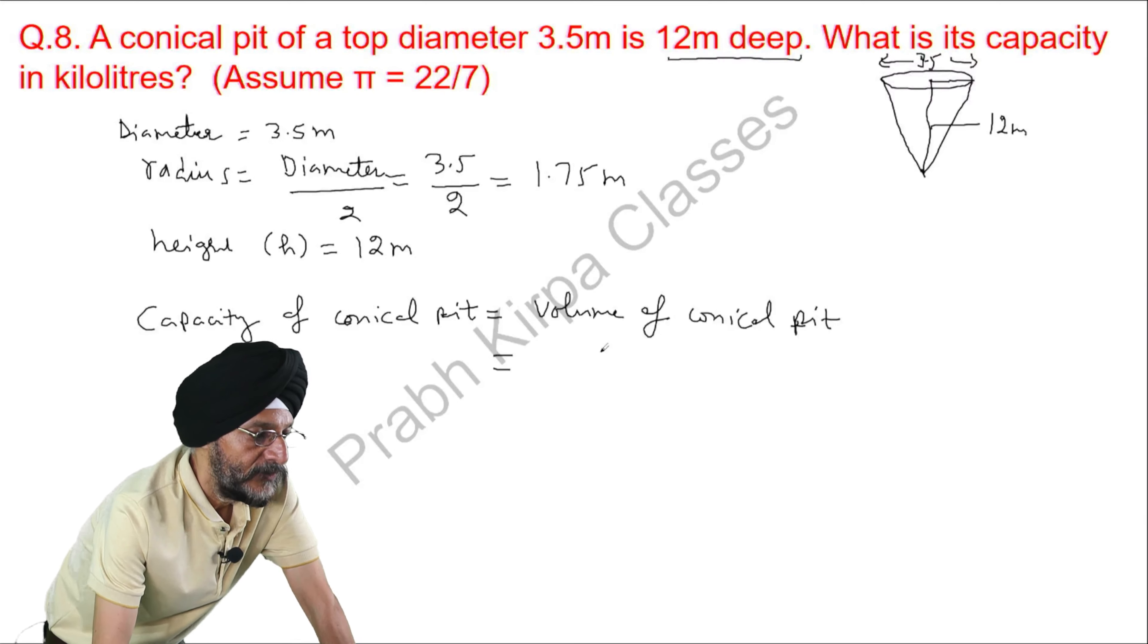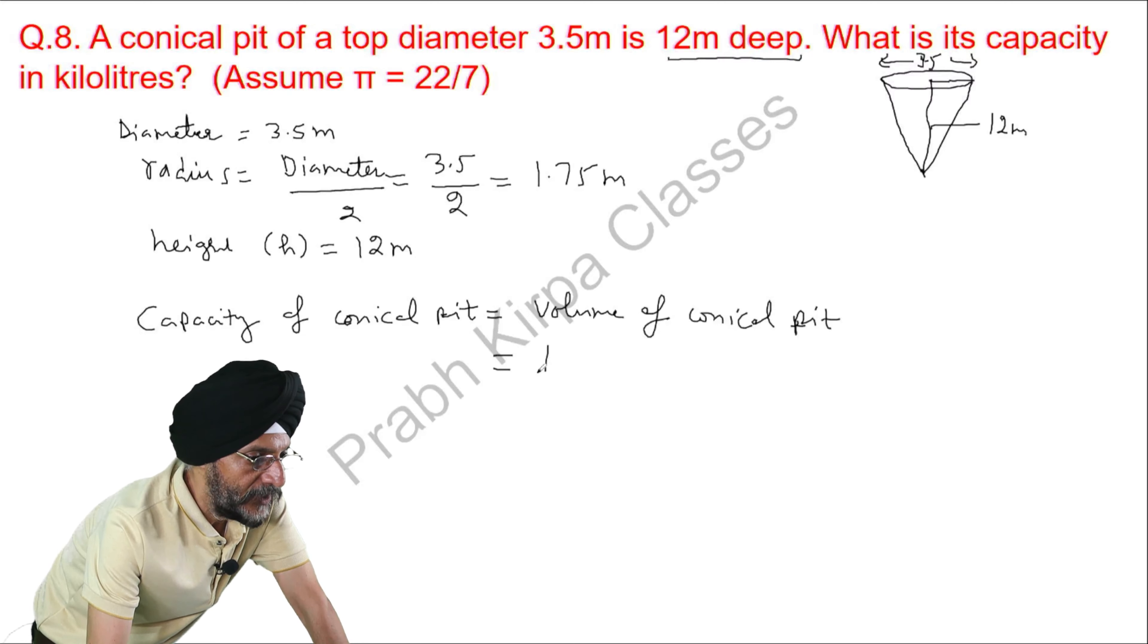So, what is the formula for volume of conical pit? It is 1 over 3 pi r square h.